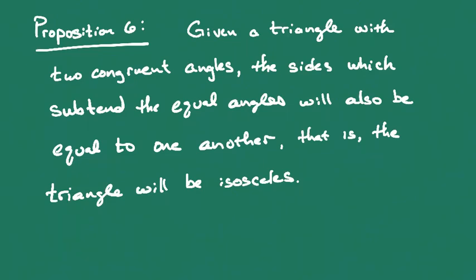Welcome everybody to the next proposition. We have Euclid's Proposition 6, which says: given a triangle with two congruent angles, the sides which subtend the equal angles will also be equal to one another. That is, the triangle itself will be isosceles. Now let's take a look and see how we can demonstrate that this is going to be true.